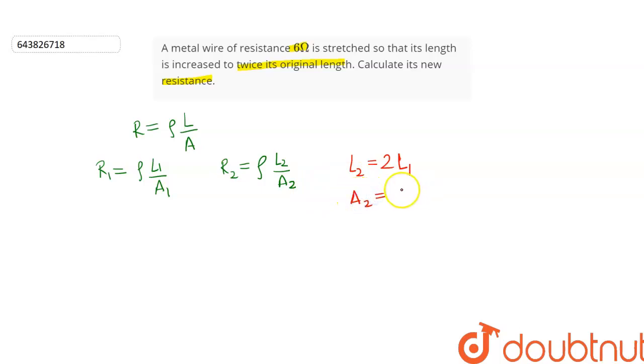Now substituting the values of L₂ and A₂ in this equation, we get R₂ = ρ(2L₁)/(A₁/2). Now dividing R₁ by R₂, we get R₁/R₂ = (ρL₁/A₁) divided by the expression for R₂.